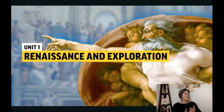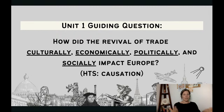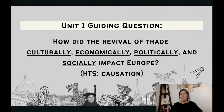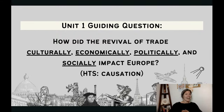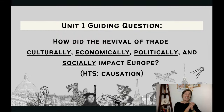As I'm going through this content, I'm not teaching you this for the first time. The point of this live review is to refresh and recap what you've already learned through looking at some skills. My guiding question for unit one is: how did the revival of trade culturally, economically, politically, and socially impact Europe? The historical thinking skill here is causation. If you're taking notes by hand, make four columns: cultural, economics, politics, and social changes due to the Renaissance.